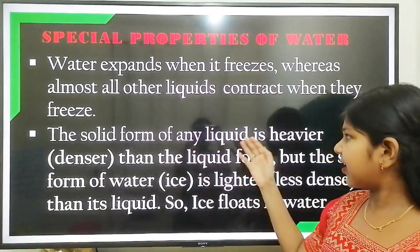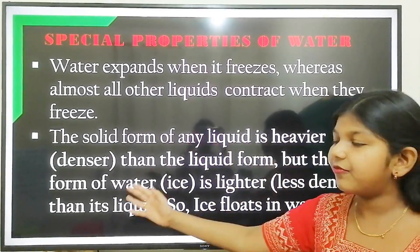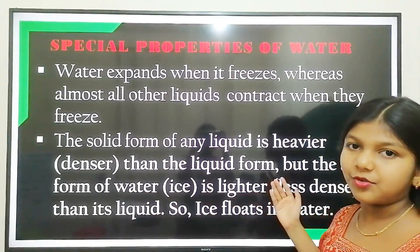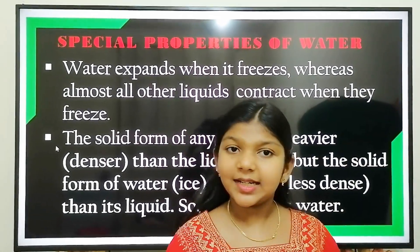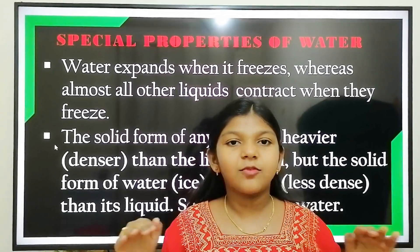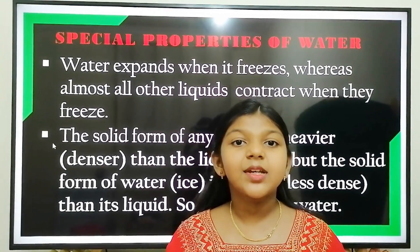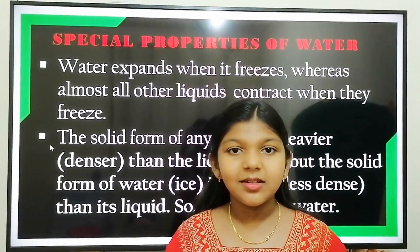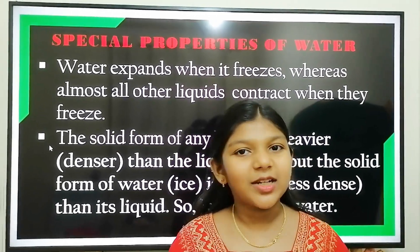The solid form of any liquid is heavier than the liquid form, but the solid form of water is lighter than its liquid, so ice floats in water. This unusual property is important in nature. In areas with lower temperature, the upper layer of the water freezes, so the ice floats on the surface of the water. The frozen layer of ice insulates the water underneath, allowing aquatic plants and animals to survive in extreme cold conditions.